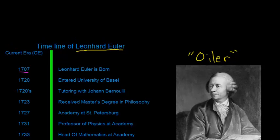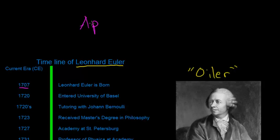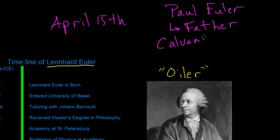Leonard Euler was born on April 15th, 1707, in Basel, Switzerland. His father Paul was a Calvinist preacher, so Euler had a fairly religious upbringing — very Christian — and his father actually intended the exact same path for Leonard.